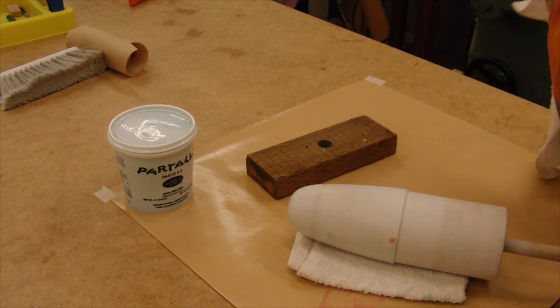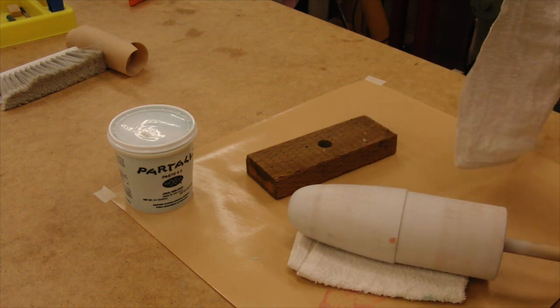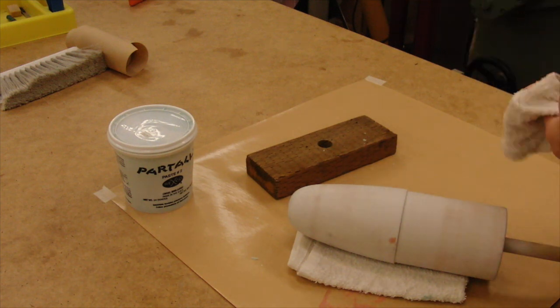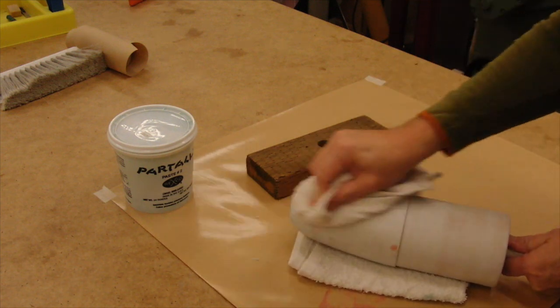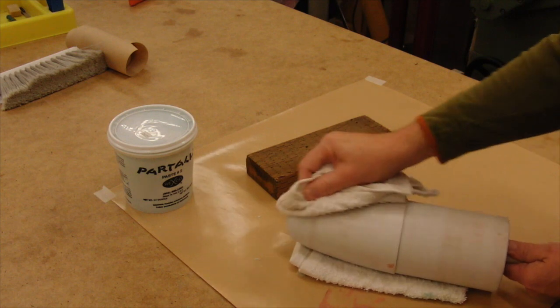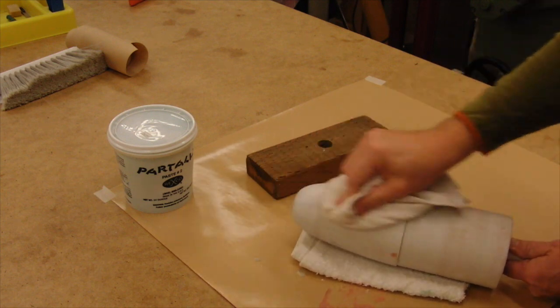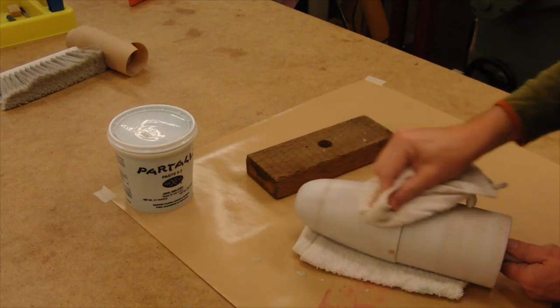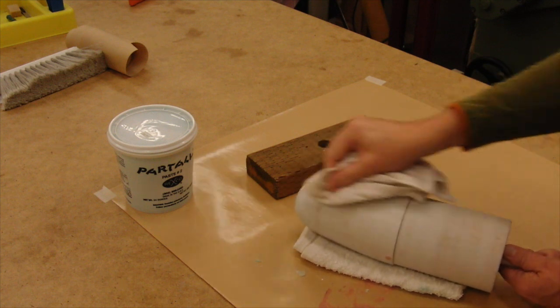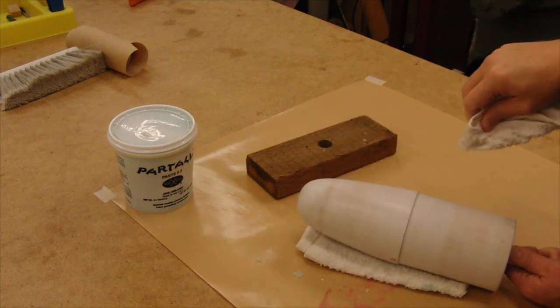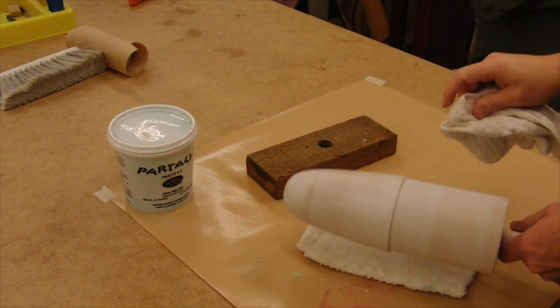So, we'll take the different towel that you didn't put the wax on with. And use that as our buffer. Now, again, if you're using a large surface, you can use a power buffer, like for cars. But, again, for this nose cone, you just do it by hand. Notice how it's starting to get smooth as I buff.